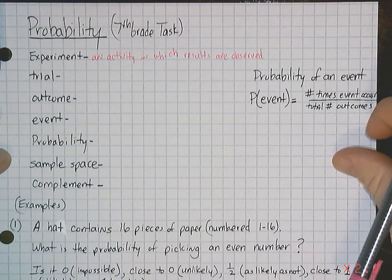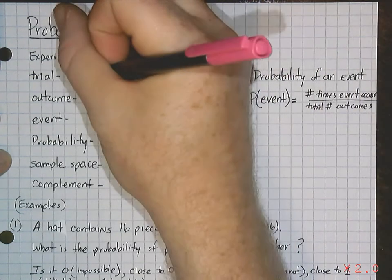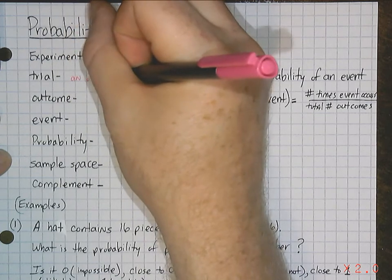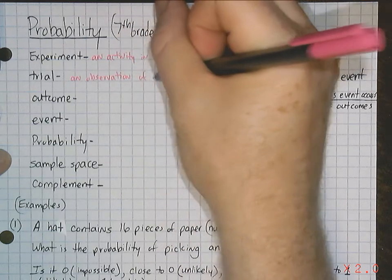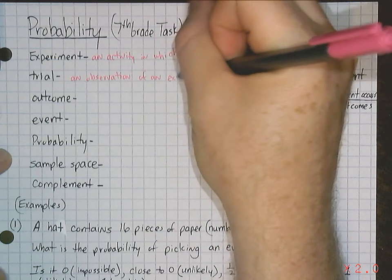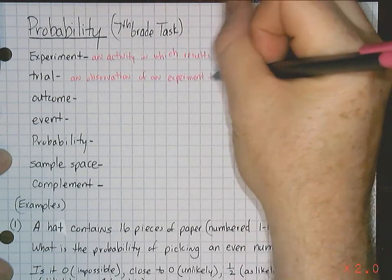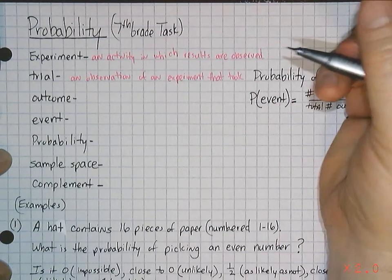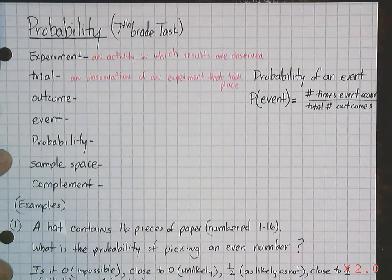Trial is basically an observation of an experiment. It's just an observation of an experiment that took place. For example, rolling a number cube. That's trial. You're watching something take place. You're watching a trial.